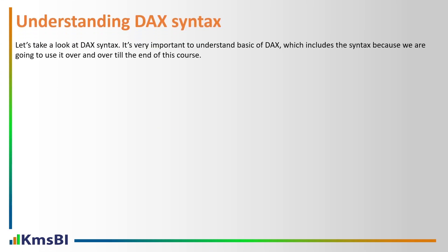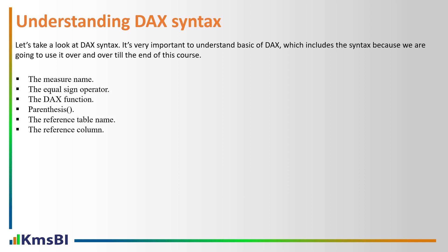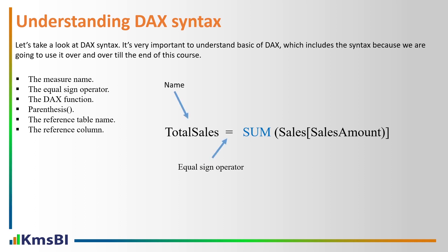Now let's look at DAX syntax. It is very important to understand the basics of DAX, which include the syntax, because we are going to use it over and over till the end of this course. The major components are: the measure name, the equal sign operator, the DAX function, parentheses, the reference table name, and reference column. For example, to calculate Total Sales: Total Sales = SUM(Sales[SalesAmount]). Here we have the measure name, the equal sign operator, the DAX function, parentheses open and close, and the reference table and column name.